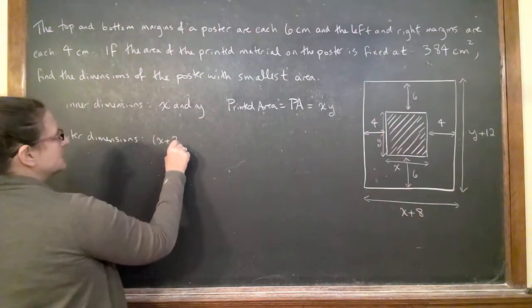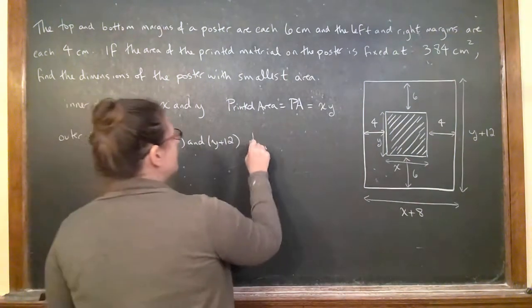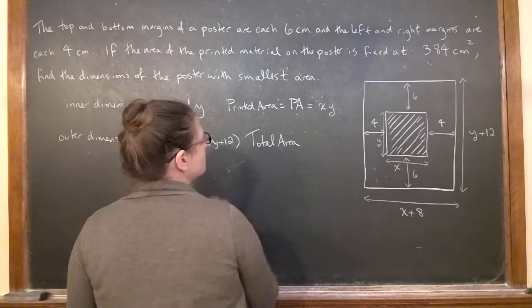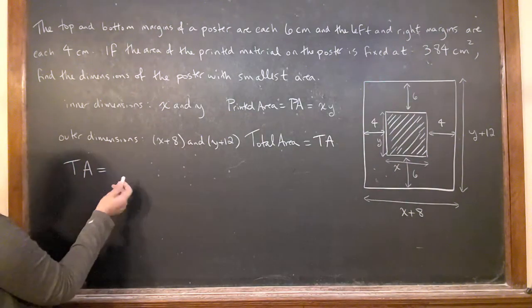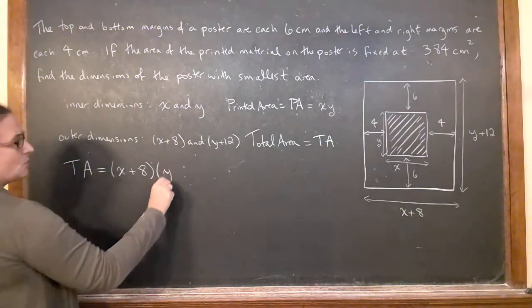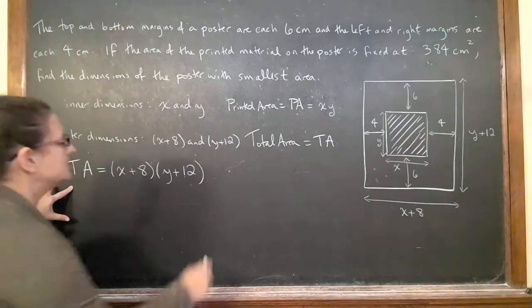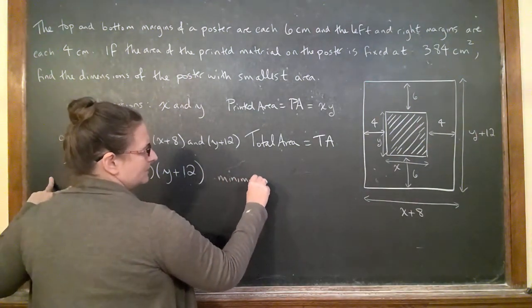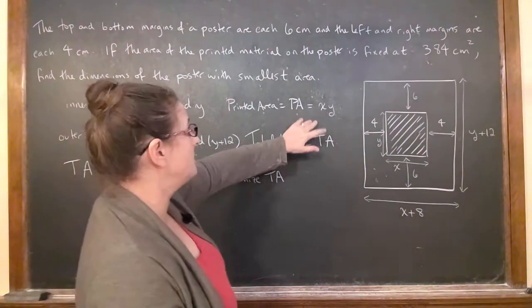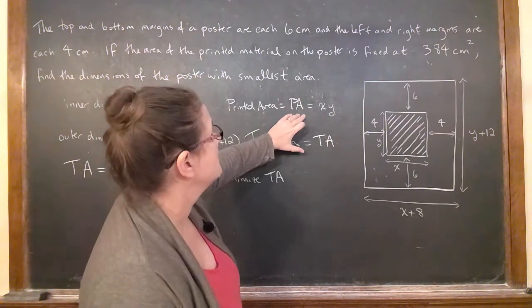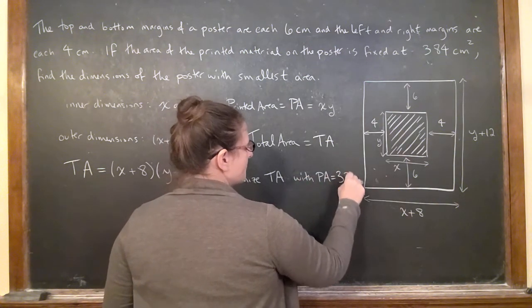The outer dimensions, I've got x plus 8 and y plus 12. So I'm going to call that total area TA. My total area is x plus 8 times y plus 12, and the problem is asking me to minimize this total area when we're constrained by the printed area being 384.